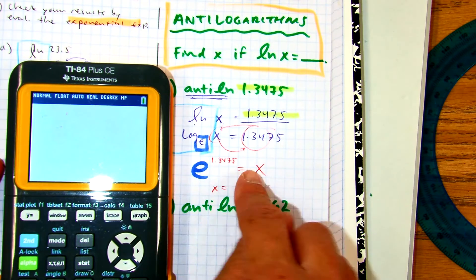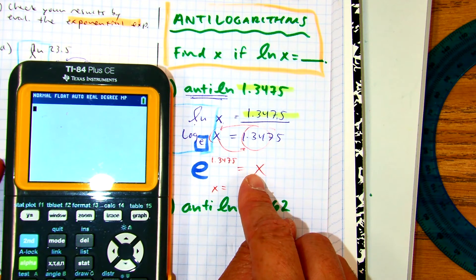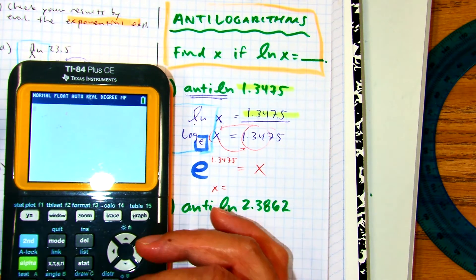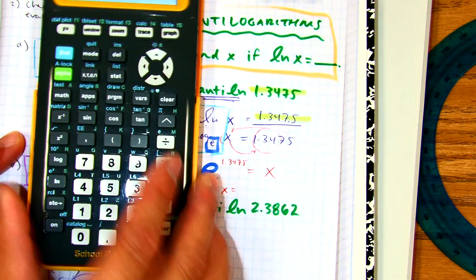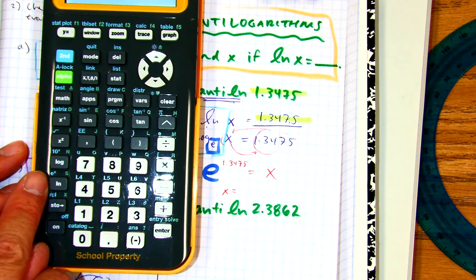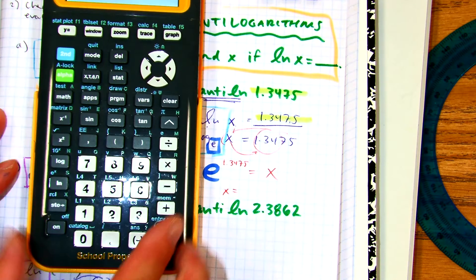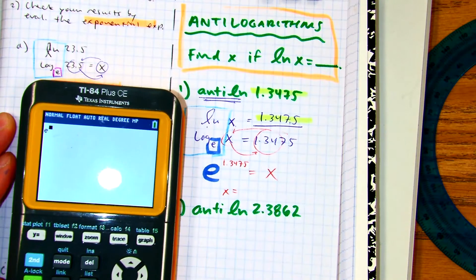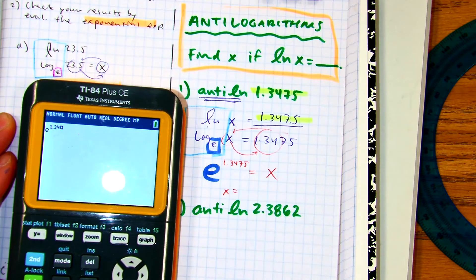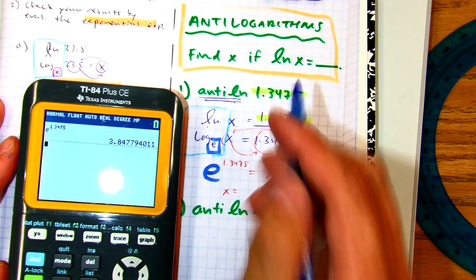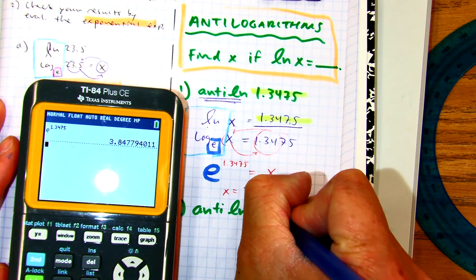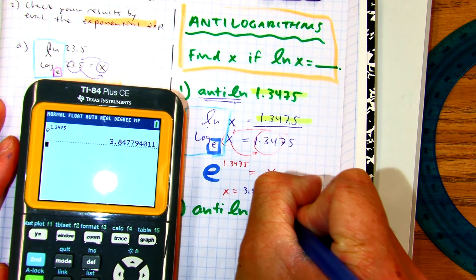Everyone say: calculator-ready equation. So when we do trig next semester, it's not just punching in a bunch of stuff — it's like you understand the process of what's happening. My E button is there by the 4, it's in blue, so I'm going to press 2nd, natural log, and then type in that number: 1.3475.